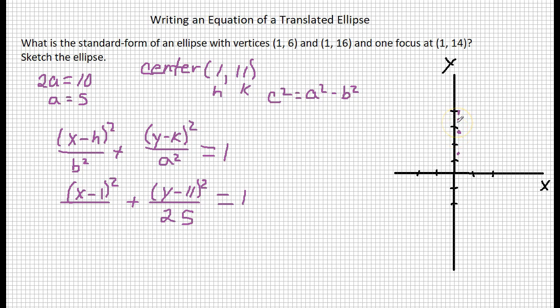If this is at 11 and this is 14, 14 minus 11 is 3. So 3 squared equals 5 squared minus b squared.